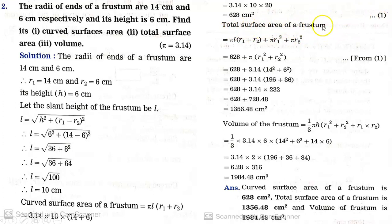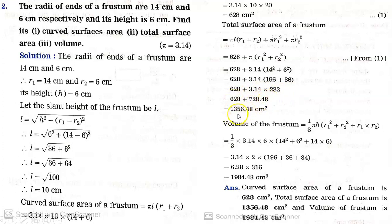Total surface area = πL(R1 + R2) + πR1² + πR2². Since πL(R1 + R2) = 628 (from part 1), we add π(R1² + R2²): 628 + 3.14 × (196 + 36) = 628 + 3.14 × 232 = 628 + 728.48 = 1356.48 cm².